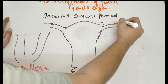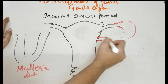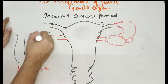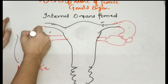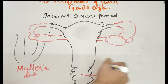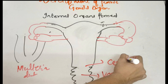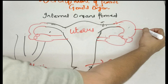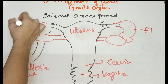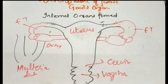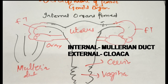The Müllerian duct forms all the internal organs: the ovaries, the fallopian tubes, the uterus, the cervix, and the vagina. This is how the whole internal organs of the female genitalia are formed. So the complete picture is: ovaries, fallopian tubes on both sides, the uterus, the cervix, and the vagina.